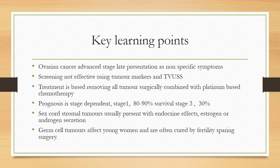What we have learned: ovarian cancer usually presents at an advanced stage because symptoms are non-specific. Screening using tumour markers and transvaginal ultrasound is not effective — even uncertain in BRCA mutation-positive carriers and the general population. Treatment is based on removing all tumours surgically combined with platinum-based chemotherapy. Prognosis is stage-dependent: stage 1 has excellent survival of 80 to 90%; stage 3 is around 30%. Sex cord stromal tumours present with endocrine effects — oestrogen from granulosa cell tumours, androgens from Sertoli-Leydig and gynandroblastomas. Germ cell tumours affect young women and are cured by fertility-sparing surgery.